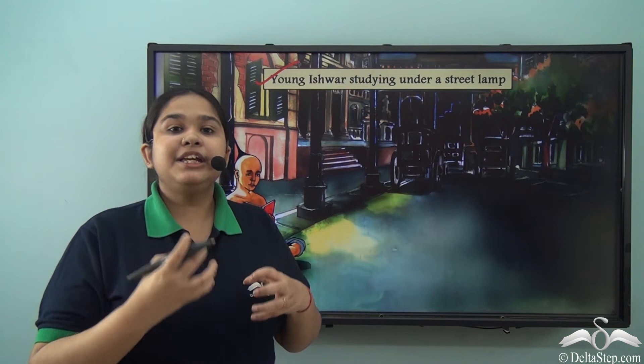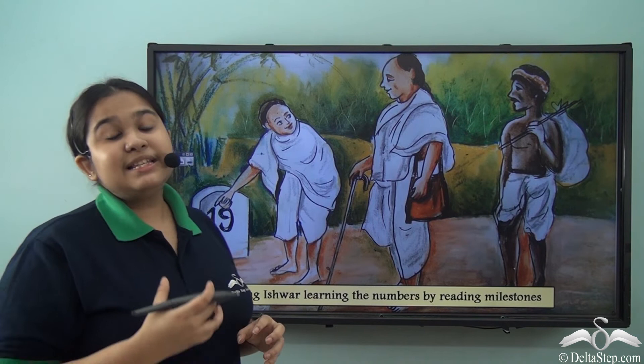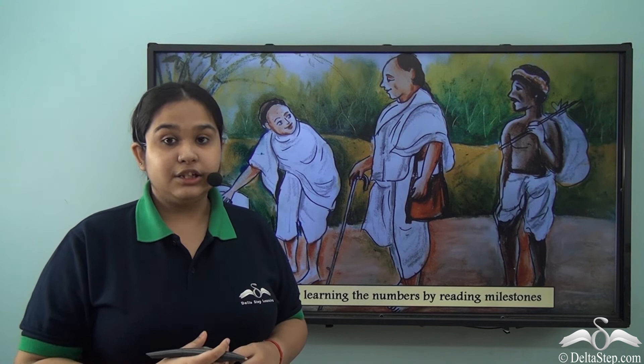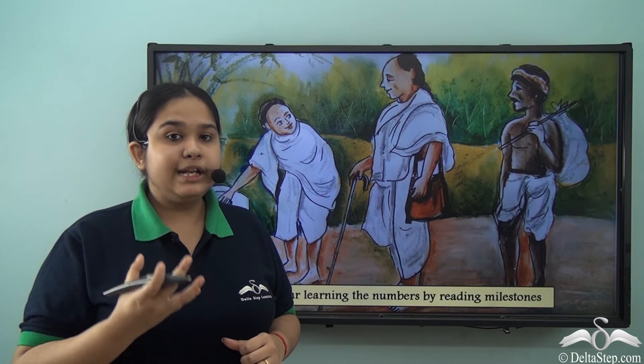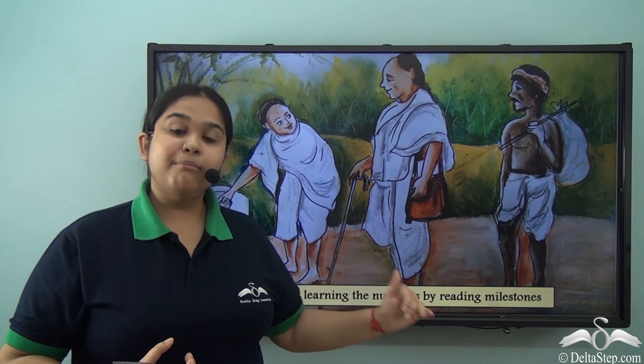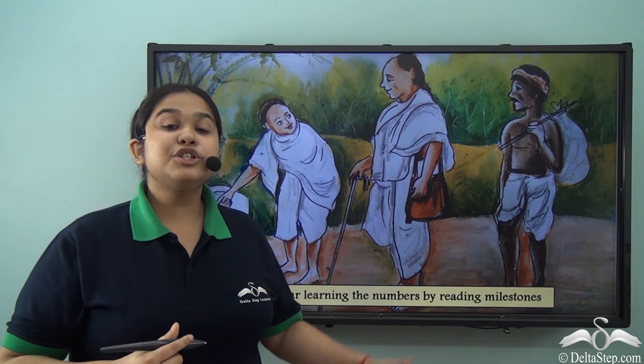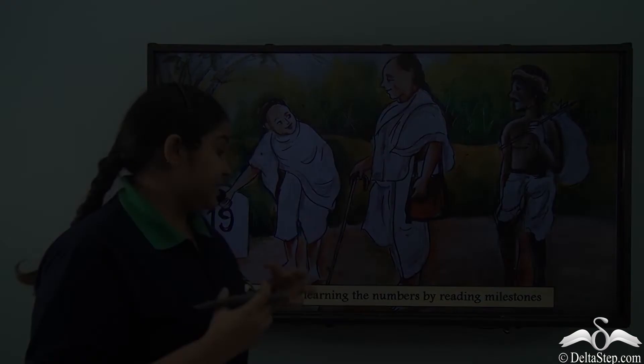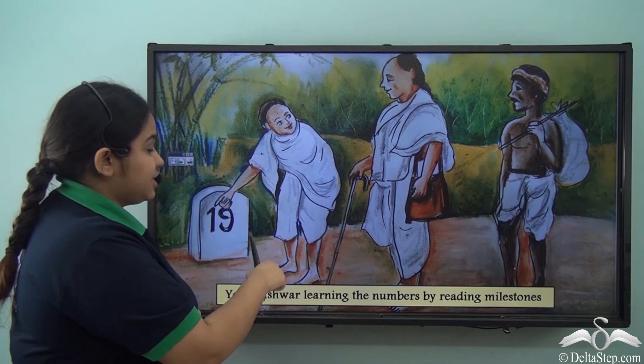It is said that once when Ishwar Chandra Vidyasagar was travelling with his father to Calcutta on foot — the only mode of transport at that time — he saw milestones with numbers written on them. His father taught him the numbers through these milestones. That was the first time Ishwar Chandra learnt about numbers, and this is how he carried on with his education. Here we can see the picture of Ishwar Chandra with his father on that journey, learning the numbers.